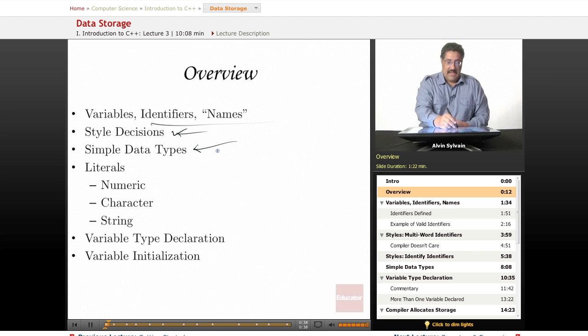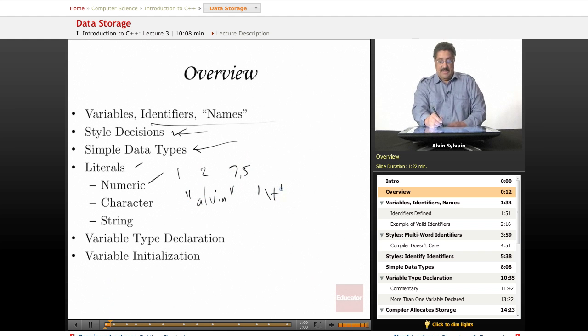We'll talk about the simple data types today. Later on, we'll talk about more complex data types, but today it's the simple data types. We have literals: numeric literals like 1, 2, 7.5; character literals like Alvin or just a single character such as the tab; and string literals, which is a series of characters.